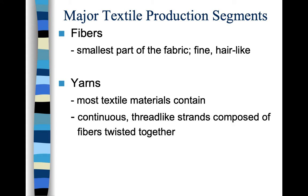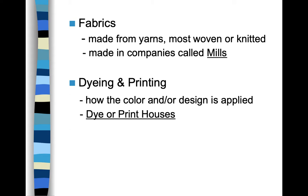Then we move into fabric. Fabric comes from yarns or directly from fibers, though it almost always goes through the yarn stage first. Fabric is usually woven or knitted. We'll talk about the difference between weaving yarn into fabric and knitting yarn into fabric. Companies that make fabric are called mills — a mill is the large facility where fabric is being woven, knitted, or otherwise constructed. A mill makes fabric, not fiber or yarn.